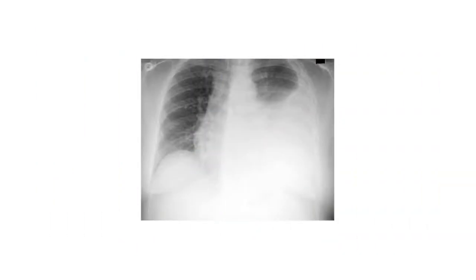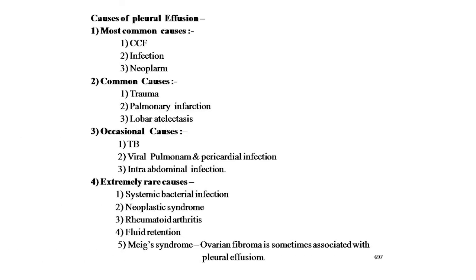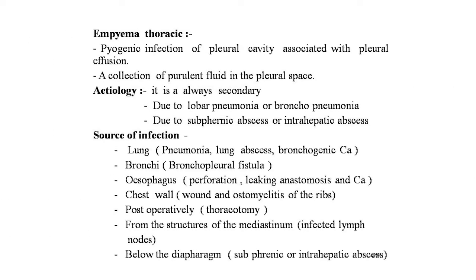Causes of pleural effusion: most common — CCF, infection, neoplasm; common — trauma, pulmonary infarction, lower lobe atelectasis; occasional — tuberculosis, viral pulmonary and pericardial infections, intraperitoneal infection (subphrenic abscess and pancreatitis); extremely rare — systemic bacterial infections, nephrotic syndrome, rheumatoid arthritis, fluid retention, and Meigs syndrome — wherein ovarian fibroma is sometimes associated with pleural effusion.